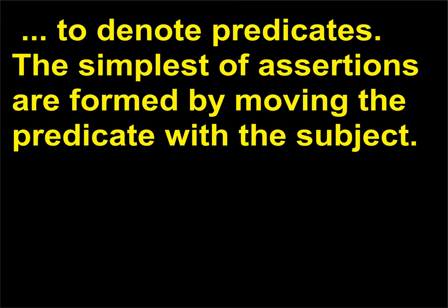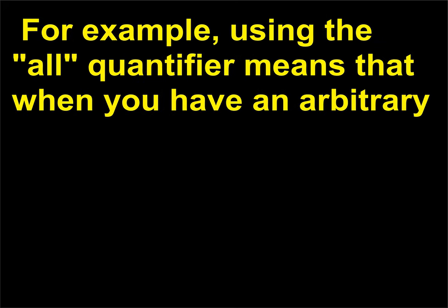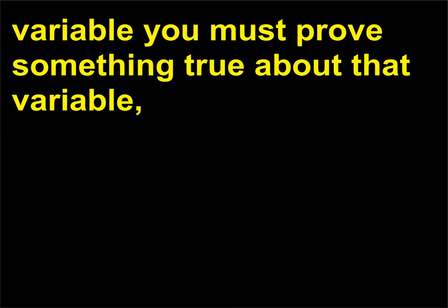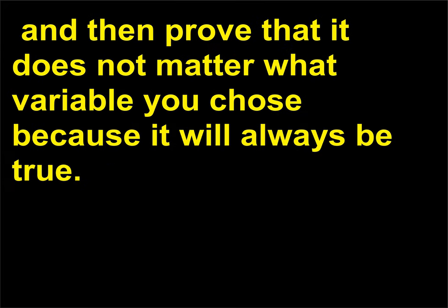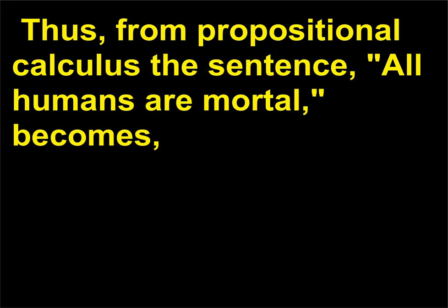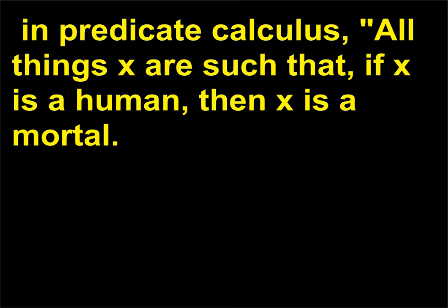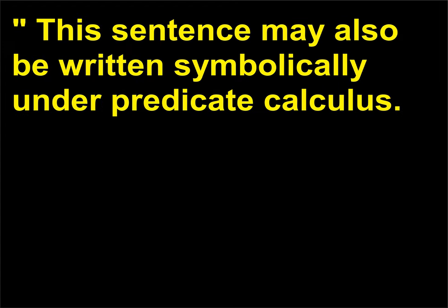The simplest of assertions are formed by moving the predicate with the subject. For example, using the all-quantifier means that when you have an arbitrary variable you must prove something true about that variable, and then prove that it does not matter what variable you chose because it will always be true. Thus, from propositional calculus the sentence 'All humans are mortal' becomes, in predicate calculus, 'all things x are such that, if x is a human, then x is a mortal.' This sentence may also be written symbolically under predicate calculus.